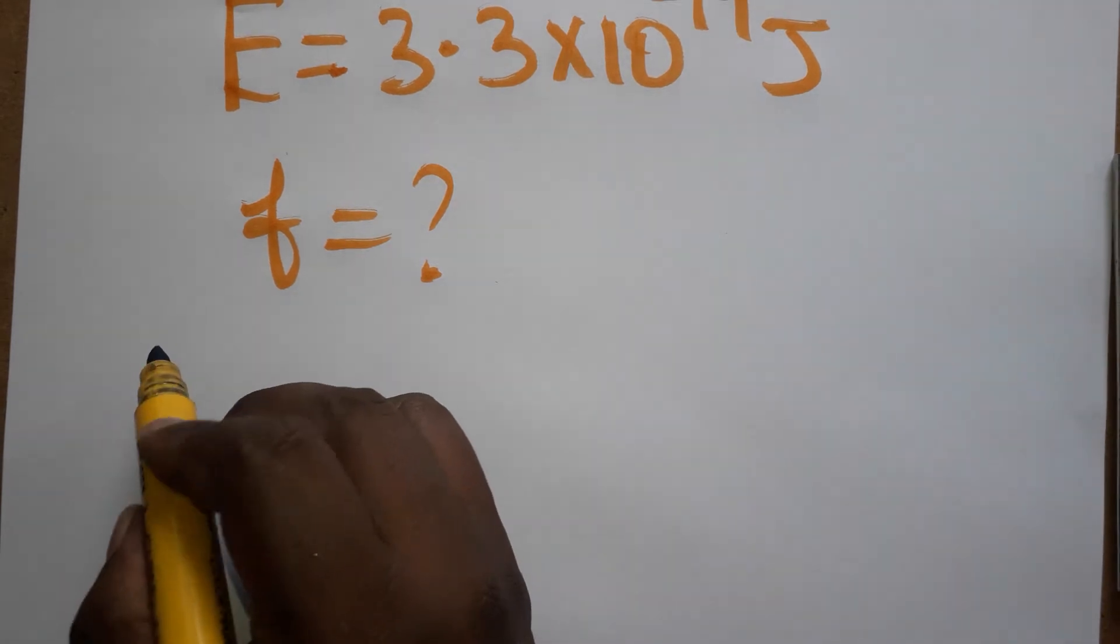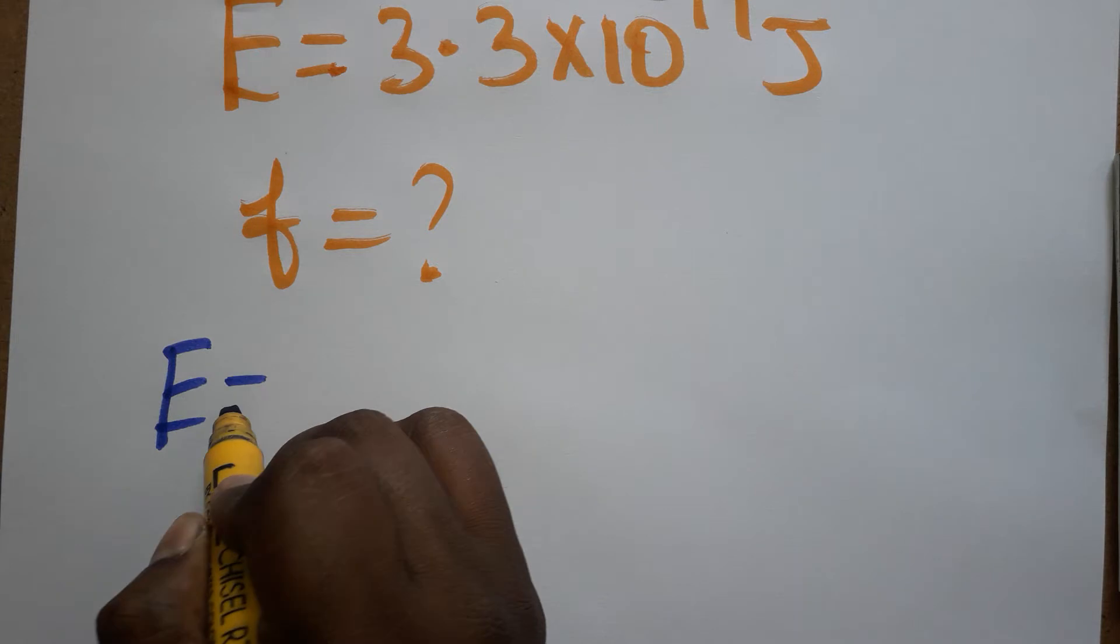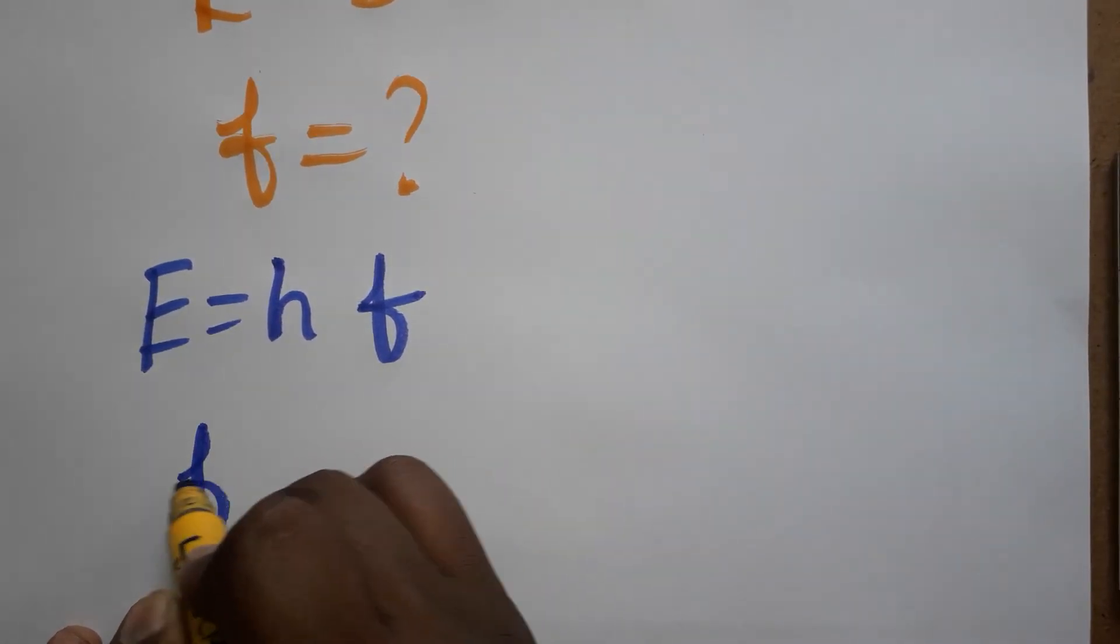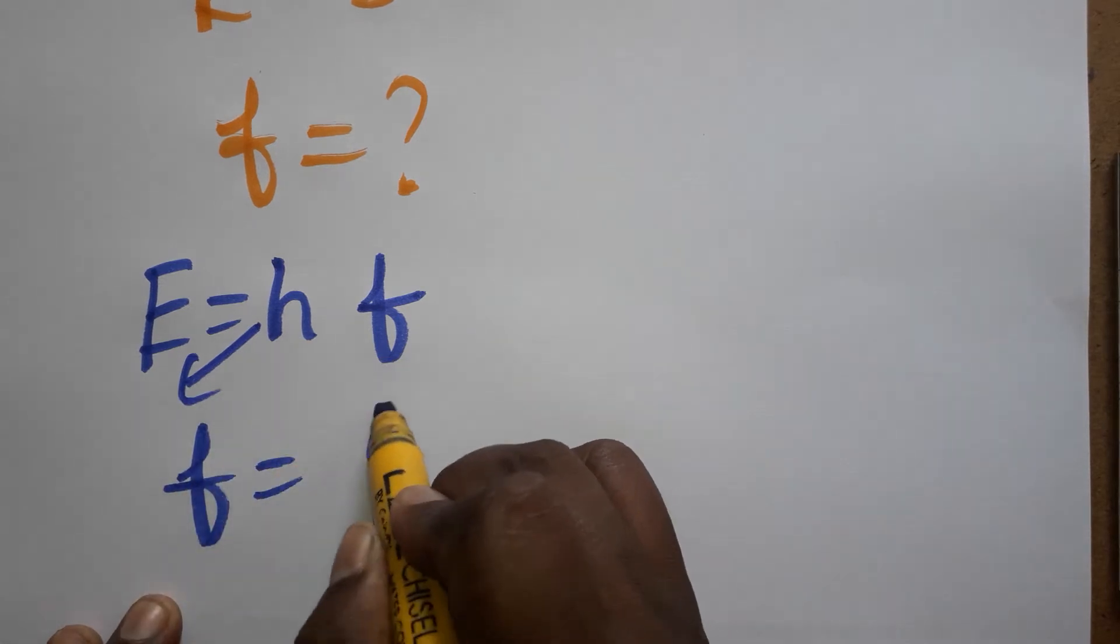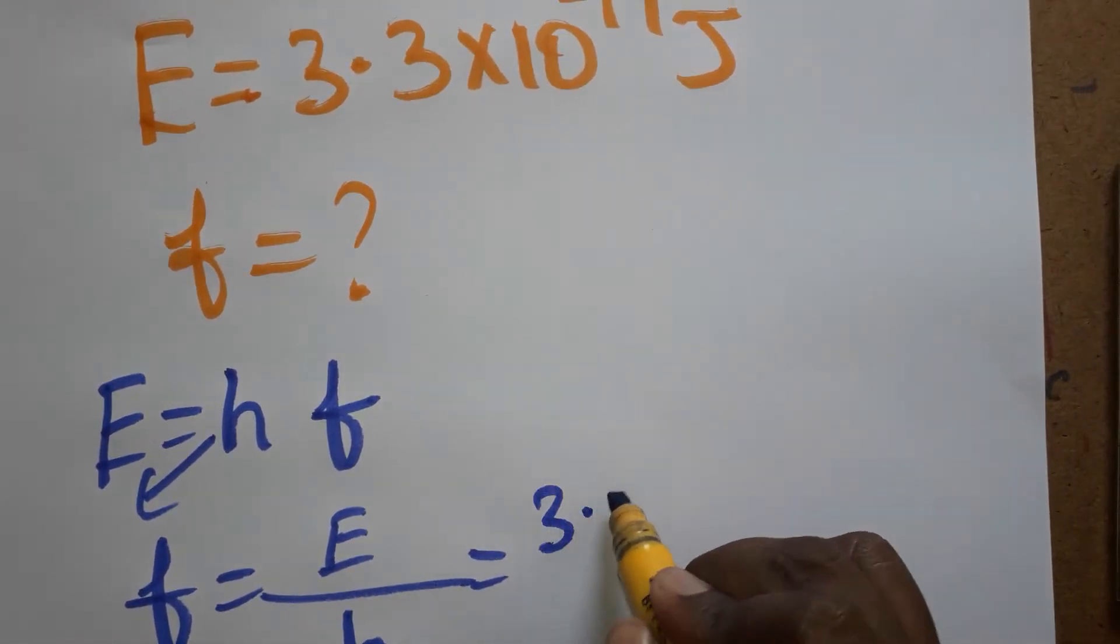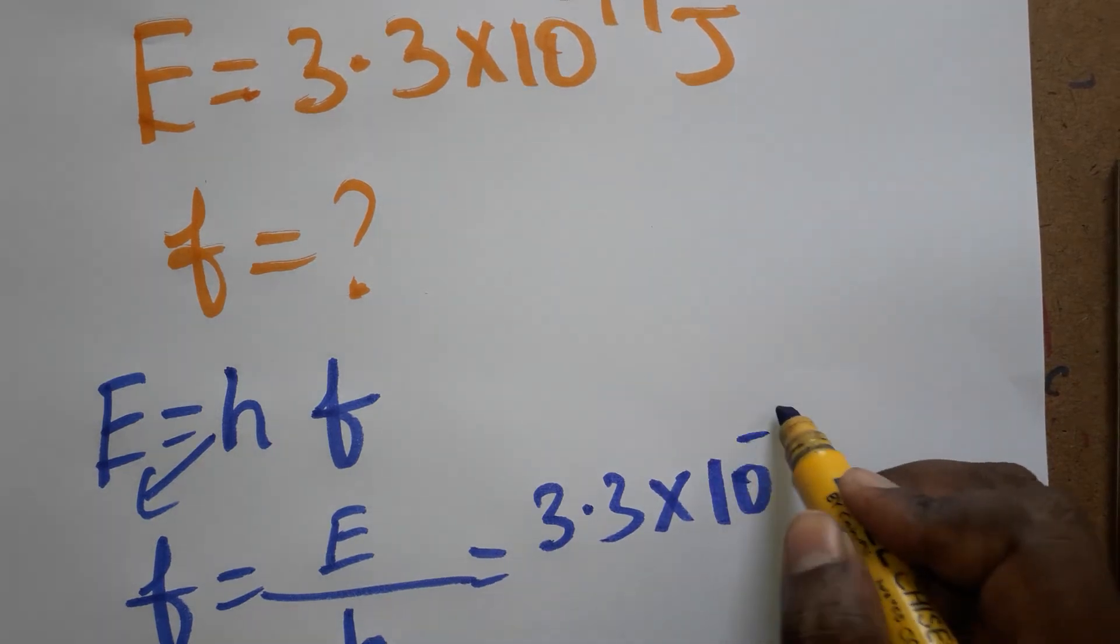Energy is equal to Planck constant times frequency. Now frequency is a question mark, so frequency is equal to energy divided by Planck constant. Energy value is given as 3.3 × 10^-19 joules.